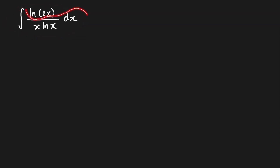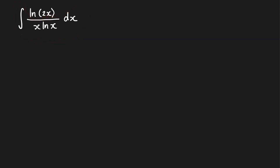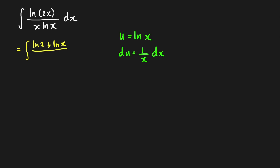This integral looks familiar — integral of dx over x·ln(x). We know we can easily solve this by u-substitution. If we let u equal ln(x), then du is equal to 1/x dx. For the ln(2x), we can write that as a sum using the property of ln: ln(2) plus ln(x). So we write the integral as the integral of (ln(2) + ln(x)) over ln(x), times dx/x.